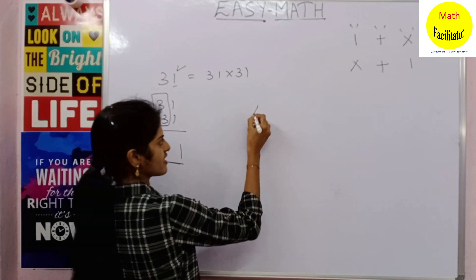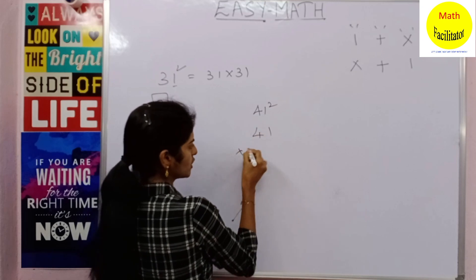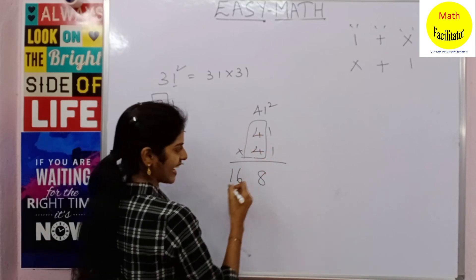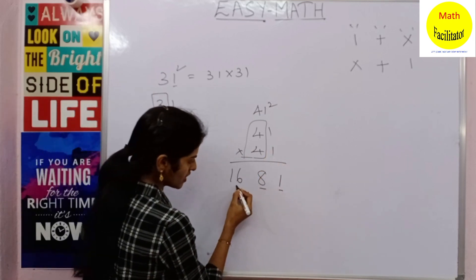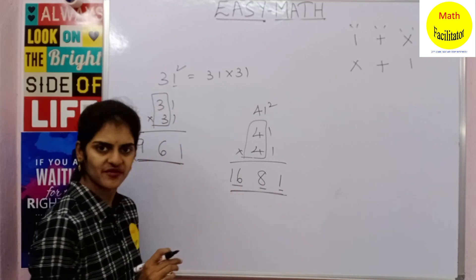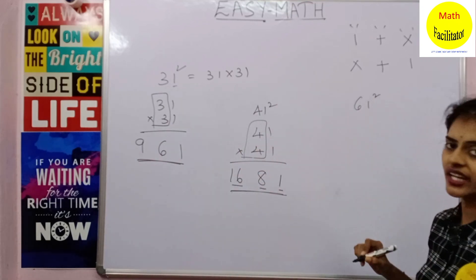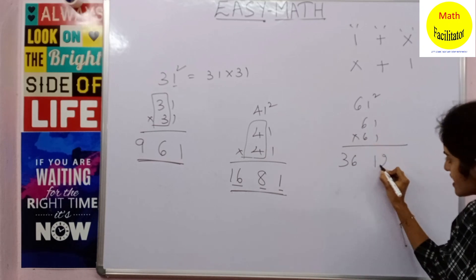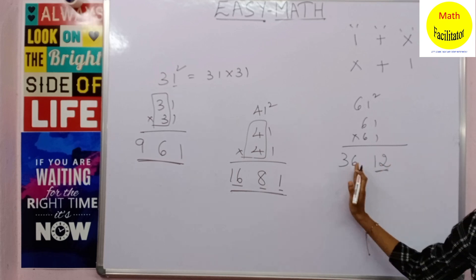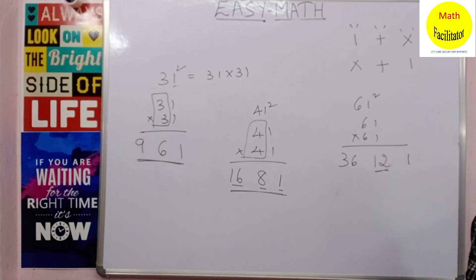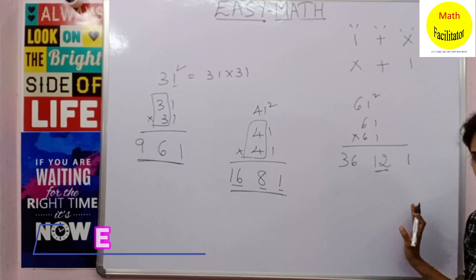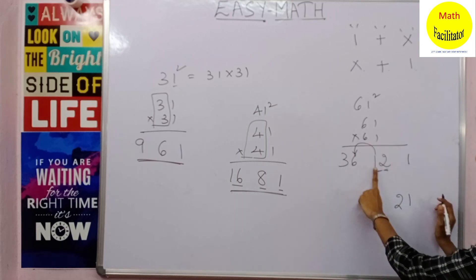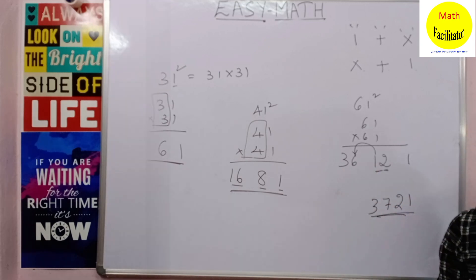Let us take 41²: multiply first — 4 × 4 = 16, then 4 + 4 = 8, then write 1. You accommodate only one digit per place, so 41² = 1681. Now 61²: 6 × 6 = 36, then 6 + 6 = 12, then write 1. Balance: write 1 as is, carry 1 to 2 giving 2, then 6 + 1 = 7, giving 3. So 61² = 3721.